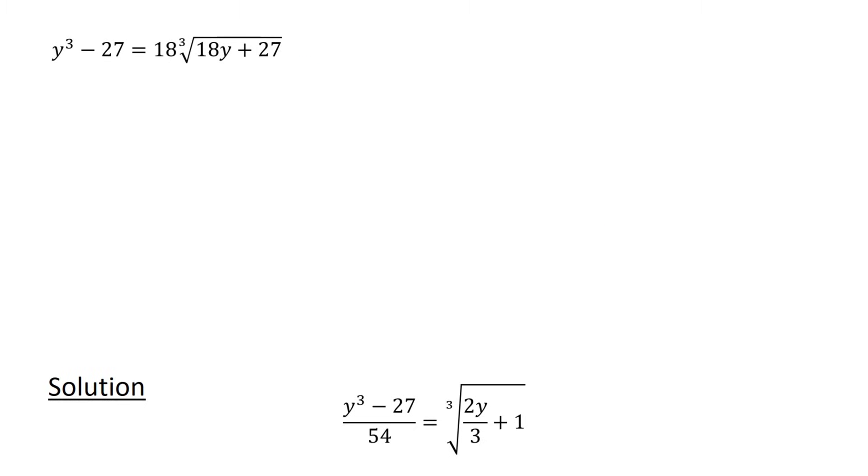Next, we make the substitution z equals cube root of 18y plus 27. Cubing this equation gives us z cubed equals 18y plus 27. Let's call this equation 1, while our original equation becomes y cubed minus 27 equals 18z, or y cubed equals 18z plus 27. Let's call this equation 2.